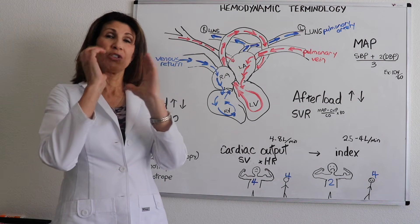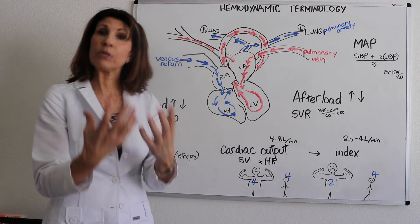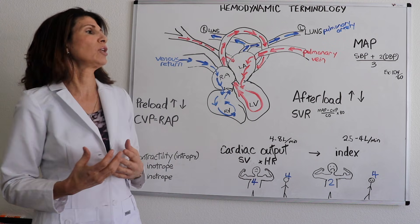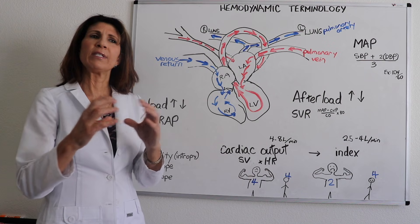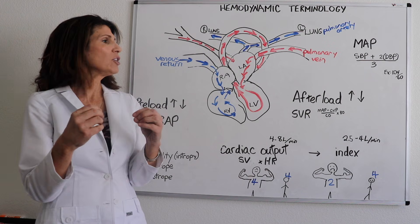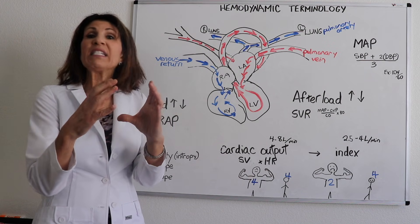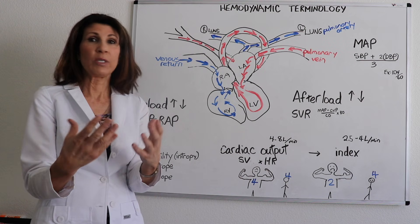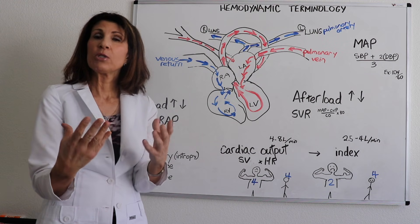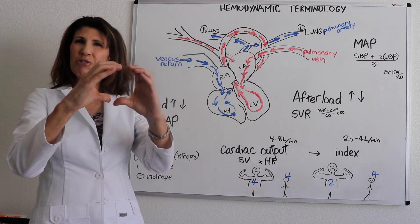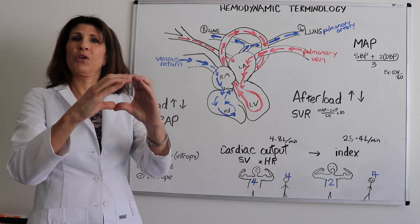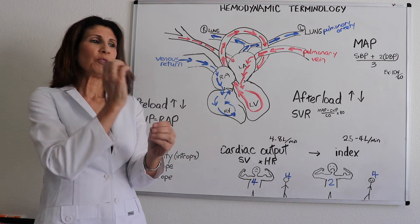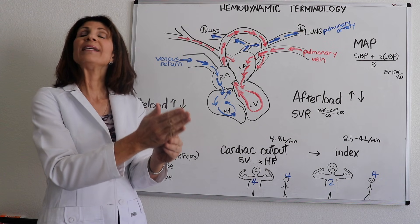Now let's talk about afterload. By definition, afterload is the resistance that the ventricles must push against with their systolic ejection. Do we ever have patients with resistance that's too high? That's the patient we treat on an ongoing basis — patients with hypertension have increased resistance and increased afterload. So we give afterload reducers, such as ACE inhibitors.